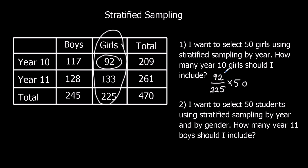All we've got to do is type this into the calculator: 92 over 225 times 50. That gives 20.44. Can I include 20.44 girls? No. So you round it to the nearest whole number — you should include 20 year 10 girls.